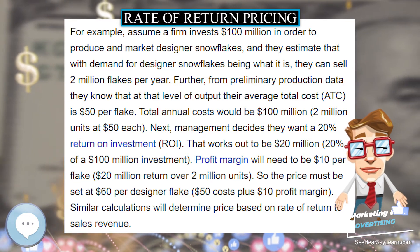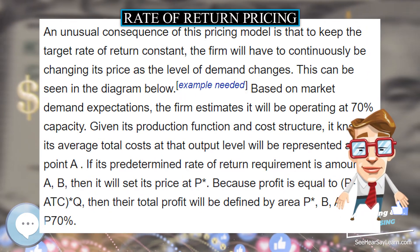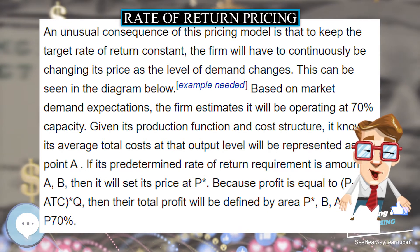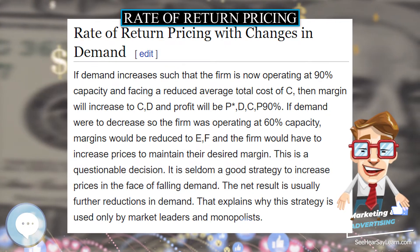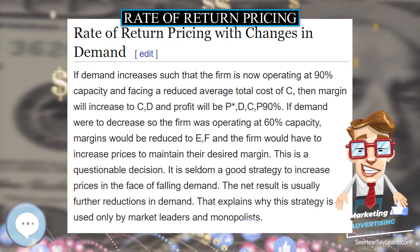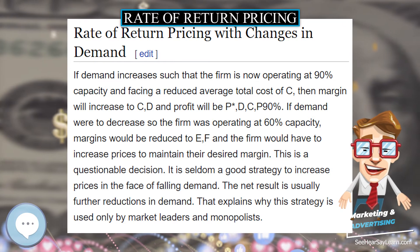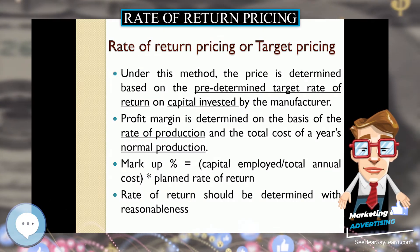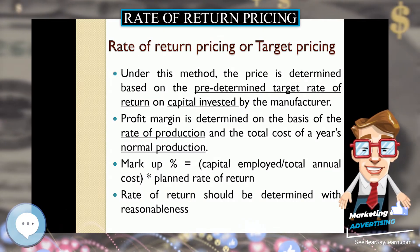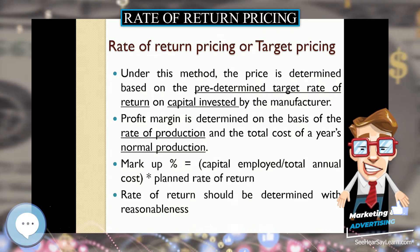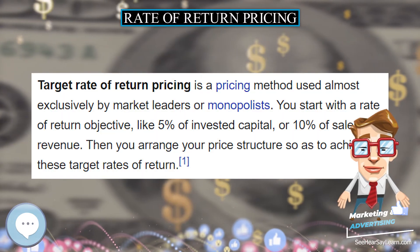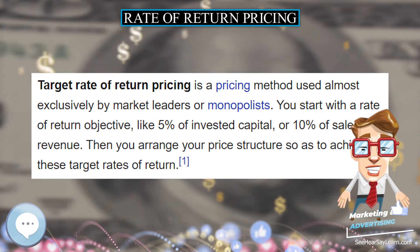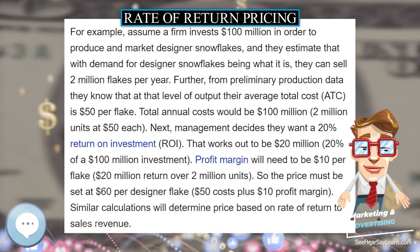With changes in demand: if demand increases such that the firm is now operating at 90 percent capacity and facing a reduced average total cost of C, then the margin will increase to C-D and profit will be defined by the area P-D-C-P at 90 percent.